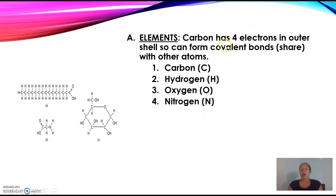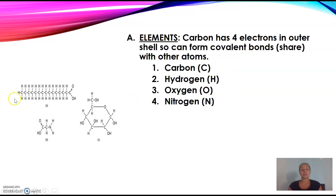Carbon has four electrons in the outer shell, so it can form covalent bonds — covalent just means to share — with other atoms. It will share with carbon, hydrogen, oxygen, and nitrogen. These elements are for living things, so you're going to see them over and over again. This here would be like lipids, you have your amino acid here, and this is like a sugar molecule. By hopefully Friday, you'll be able to look at this and identify it easily.